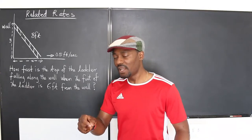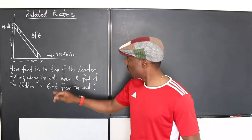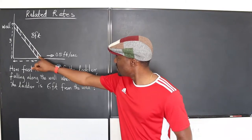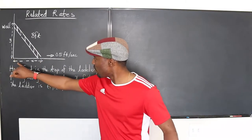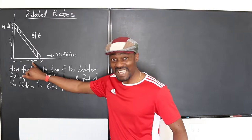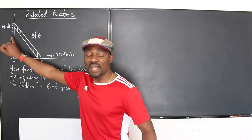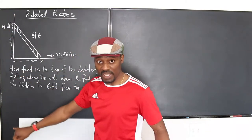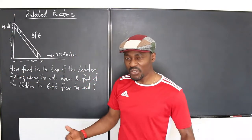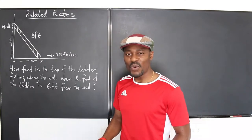Before we go on, what do we know? We know the rate at which the foot is moving away from the wall—that would be the rate of change of x, that's dx/dt. We're looking for dy/dt, the rate at which the top is falling along the wall.